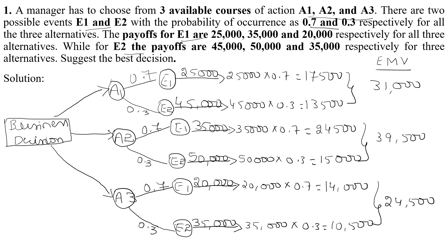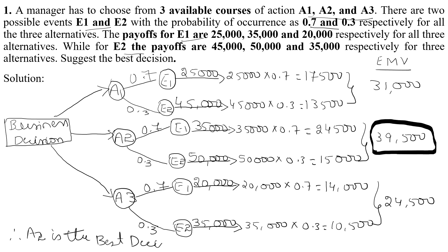So we have the expected monetary values for A1, A2, and A3. Comparing all three, the highest is 39,500, which belongs to A2. Therefore, A2 is the best decision where the manager should choose. The manager verifies based on the expected monetary values from the decision tree, and 39,500 confirms A2 is the best. Thank you, we will look at the next class.